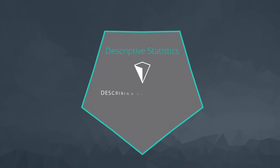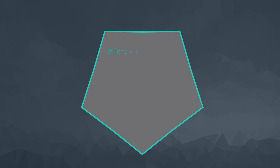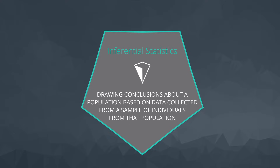The topics covered thus far have all been aimed at descriptive statistics — that is, describing the data we've collected. There's an entire other field of statistics known as inferential statistics that's aimed at drawing conclusions about a population of individuals based only on a sample of individuals from that population.